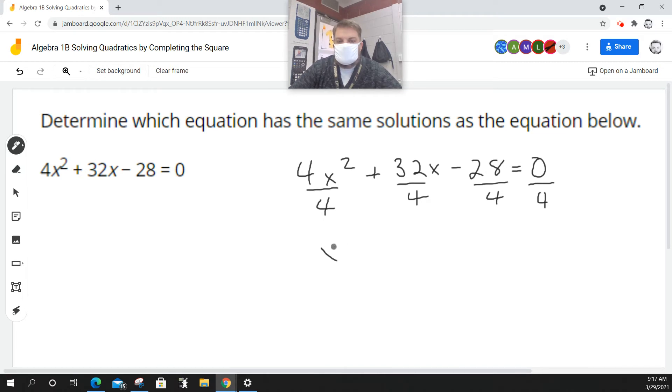4 divided by 4 is just 1, so this reduces down to x squared. 32 divided by 4 is 8, so this reduces down to 8x. Negative 28 divided by 4 is negative 7. Oh, I see what the problem is. And 0 divided by 4 is just 0.